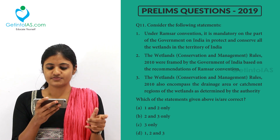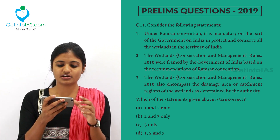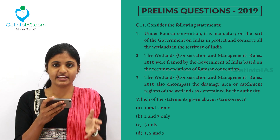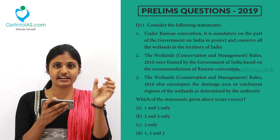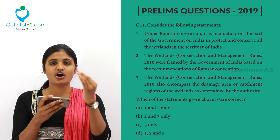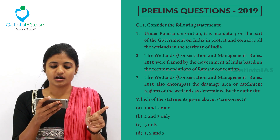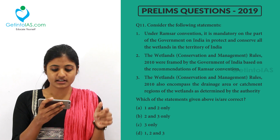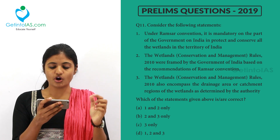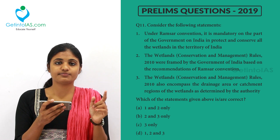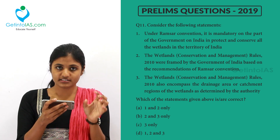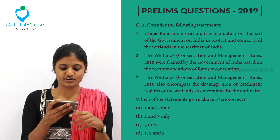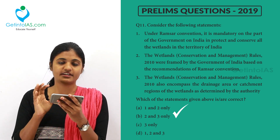Second statement: the wetland conservation and management rules of 2010 were framed by the government of India based on the recommendations of the Ramsar Convention. Definitely right. Third statement: the wetland conservation and management rules of 2010 also encompassed the drainage area or catchment area of the wetlands as determined by the authority. So the catchment regions are encompassed accordingly. Option B — 2 and 3 is the right answer.